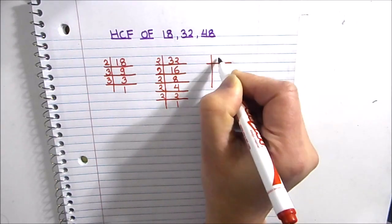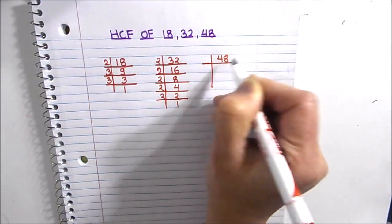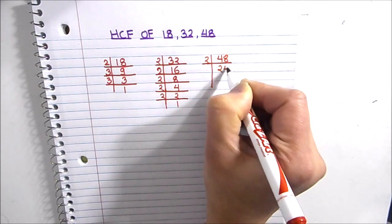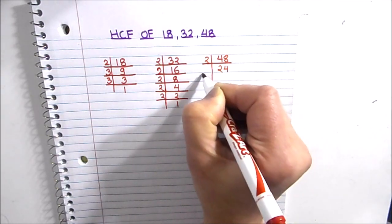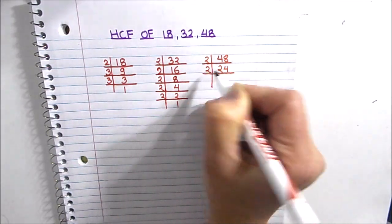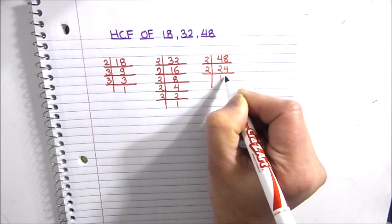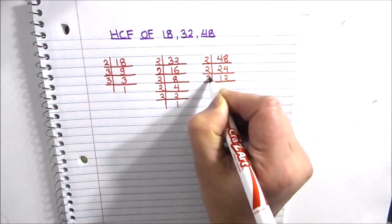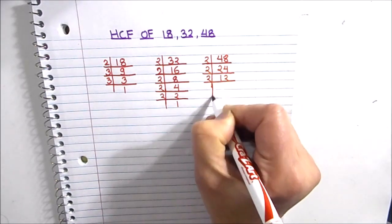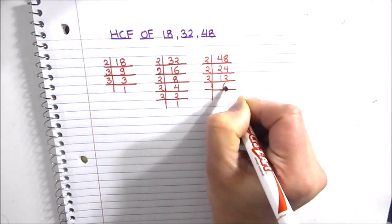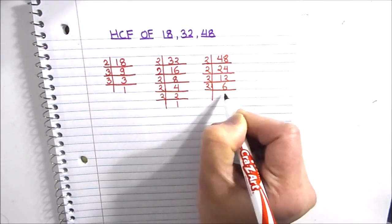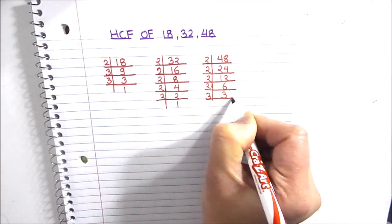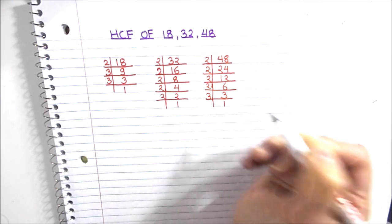Let's divide number 48. 48 is even, it is divisible by 2. Again 24 is divisible by 2. 12 is also divisible by 2. 2 times 6 is 12, and 2 times 3 is 6, and 3 is divisible by number 3. 3 times 1 is 3.